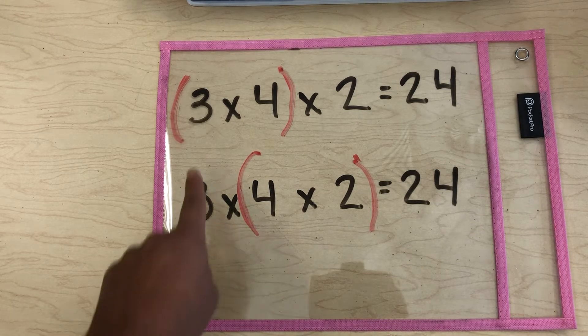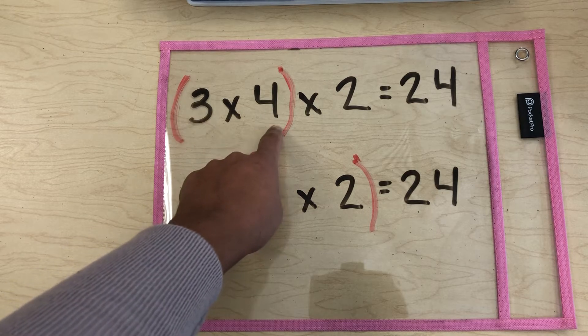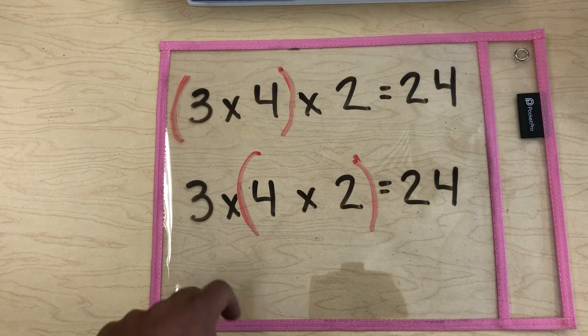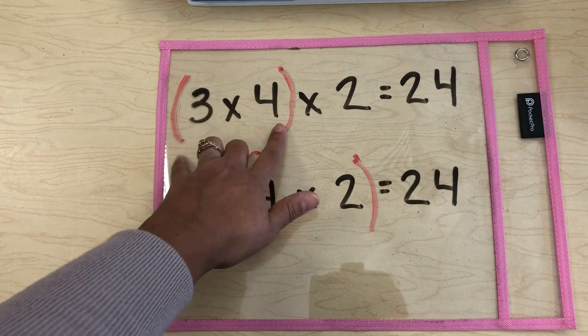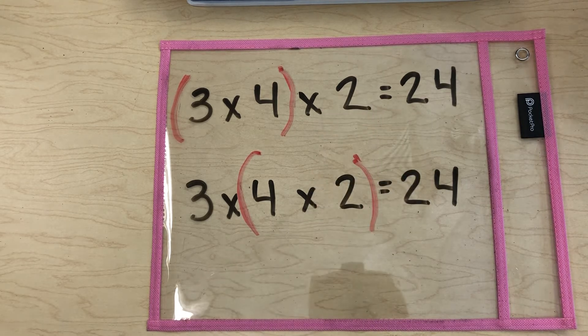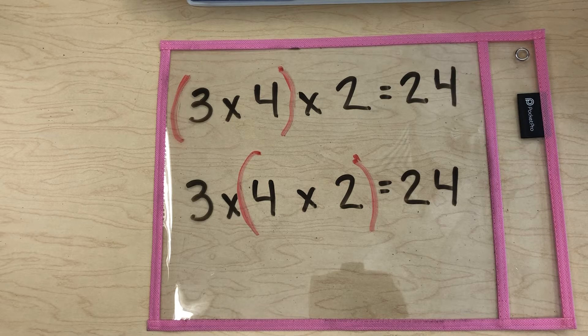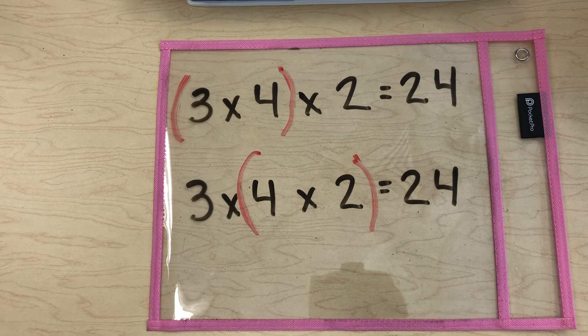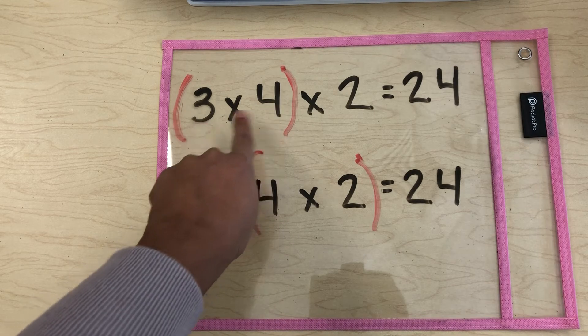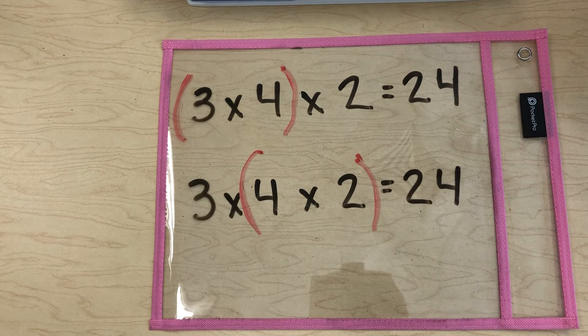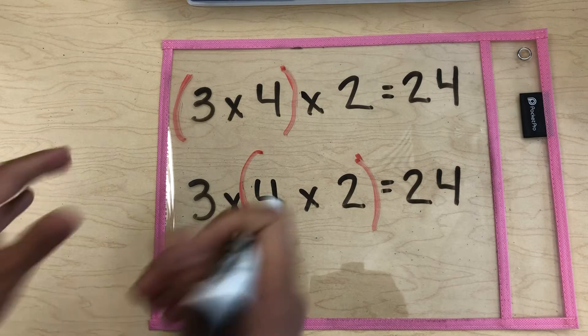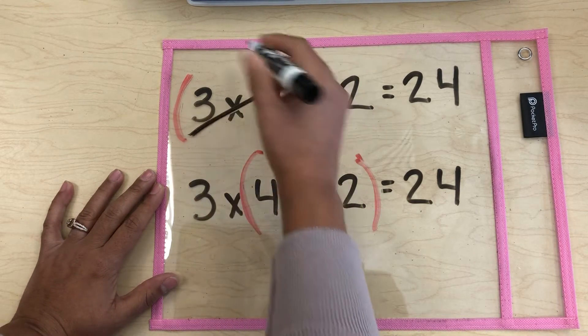First of all, let's check out what this means. 3 times 4 times 2. Remember, using multiplication, if you see any parentheses in your problem, you have to do those numbers first. Okay, so looking at the top number, we have to do 3 times 4 first because they fall in between the parentheses. Okay, so what is 3 times 4? Good. If you said 12, that is right. So 3 times 4 is 12.